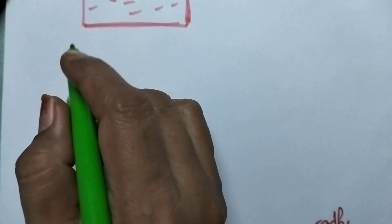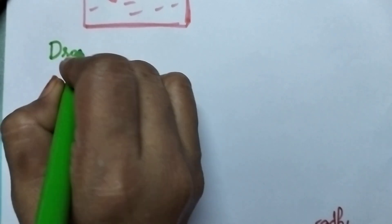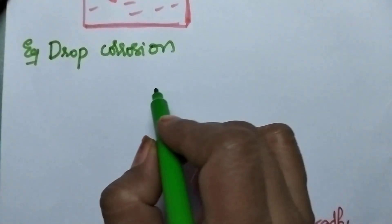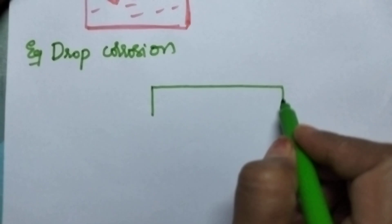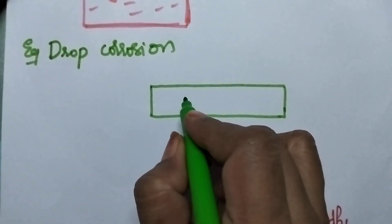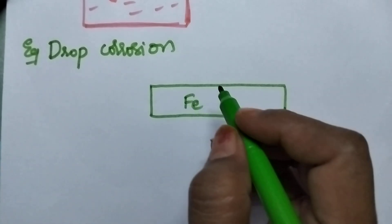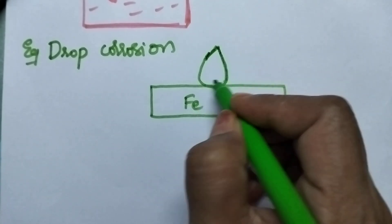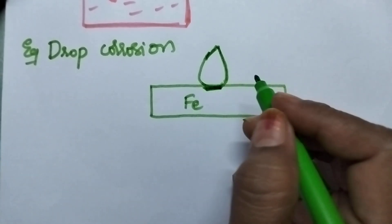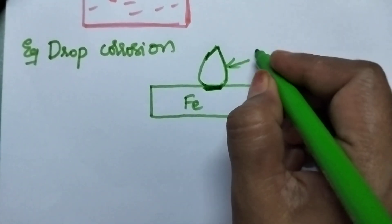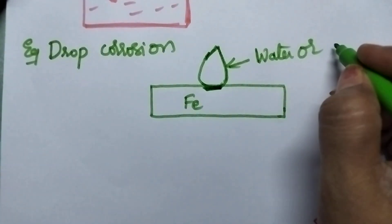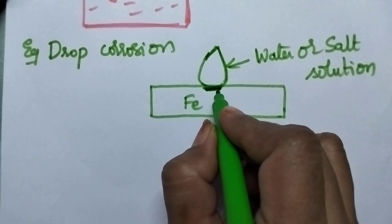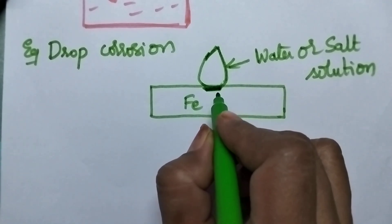Good examples of differential aeration corrosion include drop corrosion. Drop corrosion means if we consider an iron rod, the metal which is under the drop of water or salt solution undergoes corrosion, and this corrosion is due to the difference in air concentration.